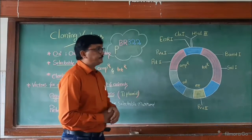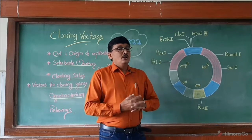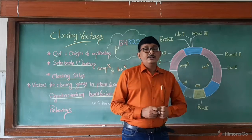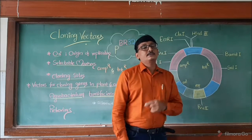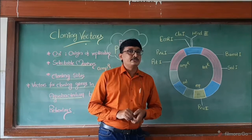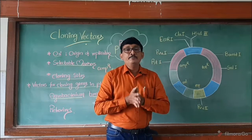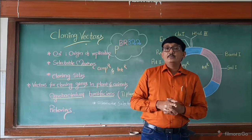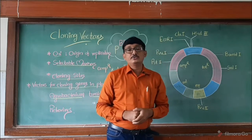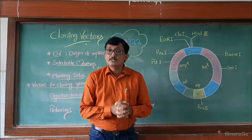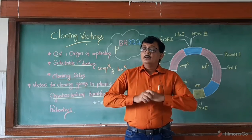The next very important feature is the presence of selectable markers. In PBR 322, two selectable markers are present: AmpR and TetR. AmpR means ampicillin resistant gene and TetR means tetracycline resistant gene — both are antibiotic resistant genes. If we introduce PBR 322 into a bacterium, that bacterium gains resistance towards antibiotics like tetracycline and ampicillin. These selectable markers are used for identification and elimination of non-transformants from transformants, and permit the growth of transformants.